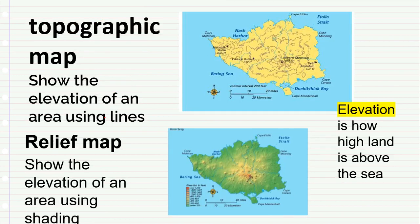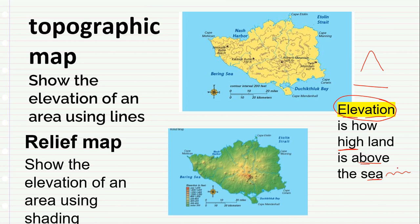Now we can look at the topographic and relief map. When we looked at landforms, we saw that the earth is not flat — it has places that are high and places that are low. The word we use to measure height, how high something is above the sea, is called elevation. There are two maps that can show us elevation.